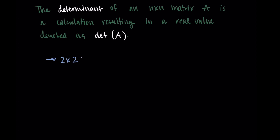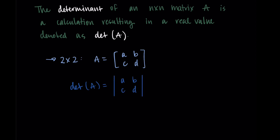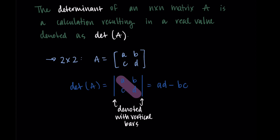I'll start with the two by two case and then build up from there. Our matrix is going to look like the first column being A, C and the second column being B, D. To take the determinant, we replace whatever brackets we're using for the matrix with vertical bars, which lets us know we're computing the determinant. Then we do this multiplying across and subtracting: A times D minus B times C. Whatever this value is, is our determinant.